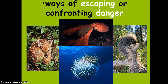Ways of escaping or confronting danger: the octopus can release ink to help it get away from a predator. The pufferfish can inflate and extend its spikes to avoid being eaten. The porcupine can make its quills extend out of its body and into whatever is trying to attack it.